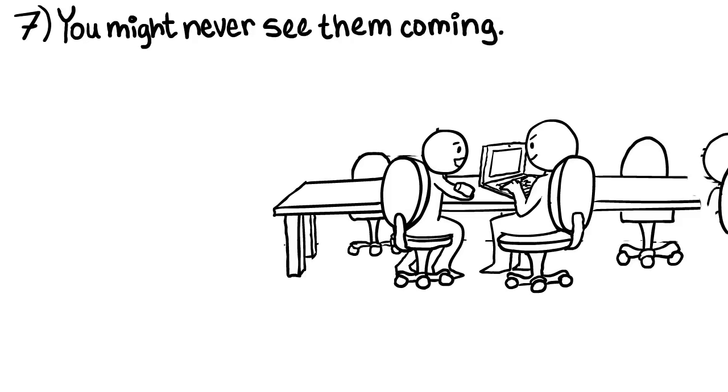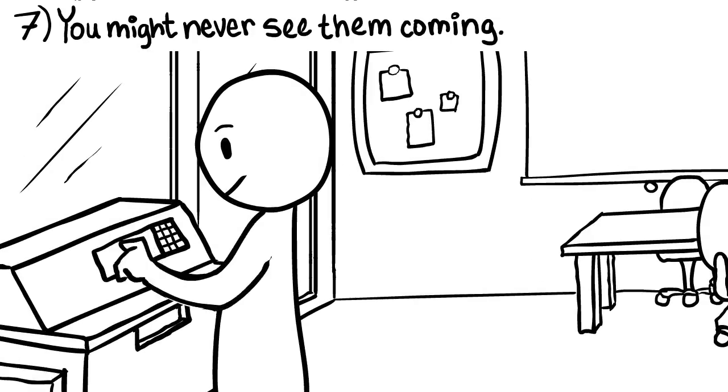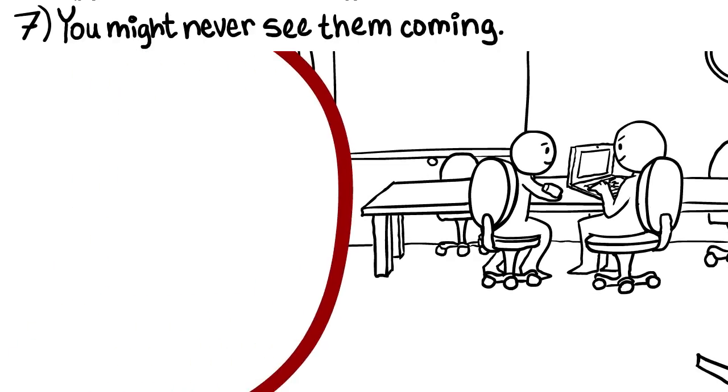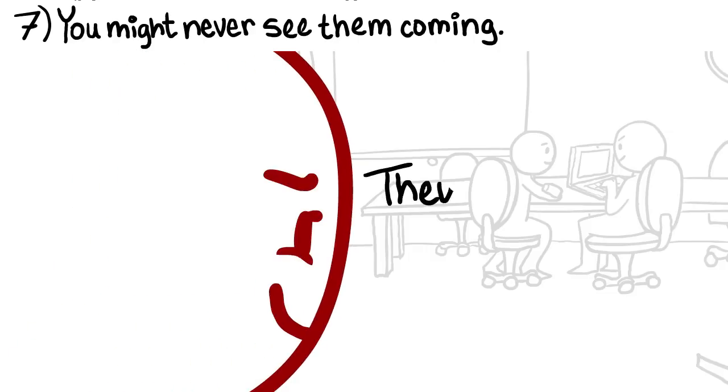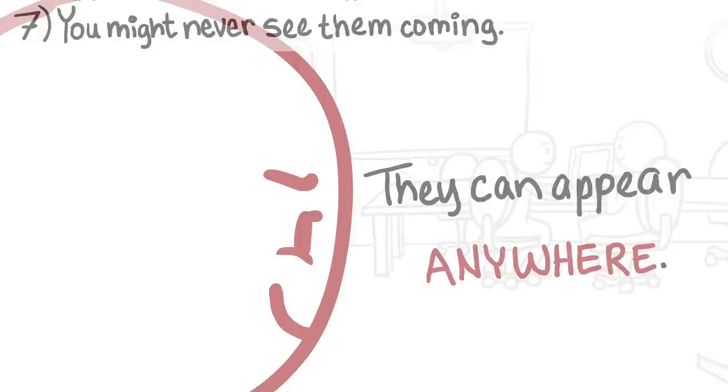7. You might never see a psychopath coming. The most disturbing thing about psychopaths might well be their ability to blend in. This makes them difficult, if not impossible, to detect. You might not be able to tell if someone is a psychopath. Remember, they can appear anywhere, even in positions of power and responsibility. Positions that are supposed to be occupied by people that you can trust.